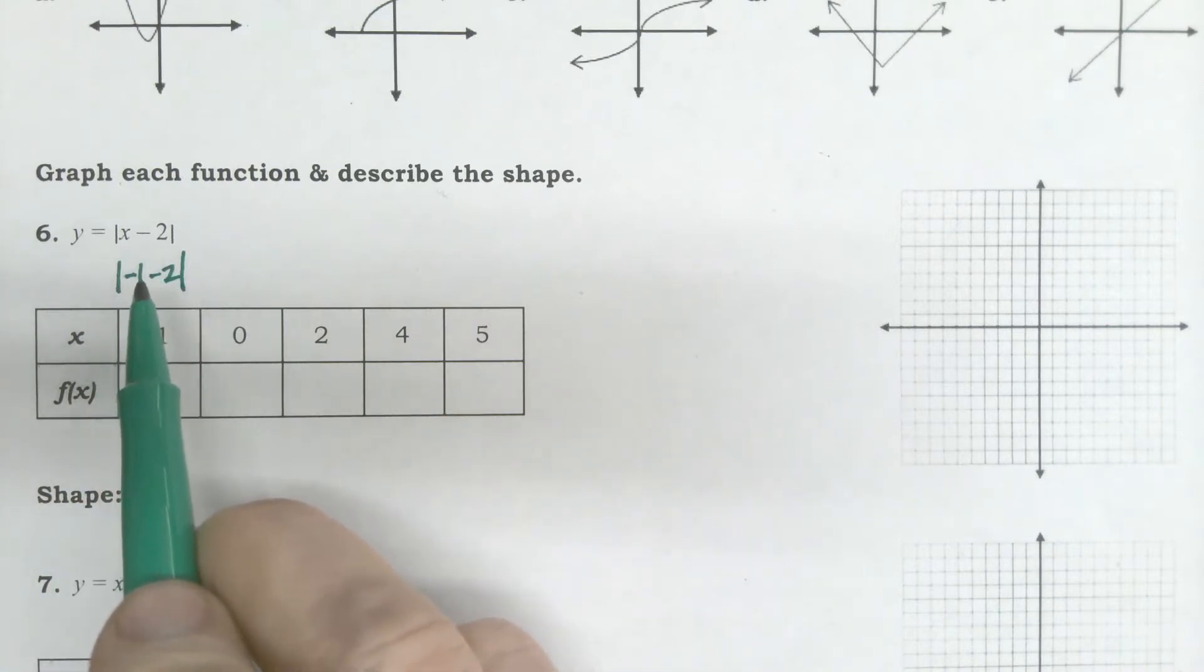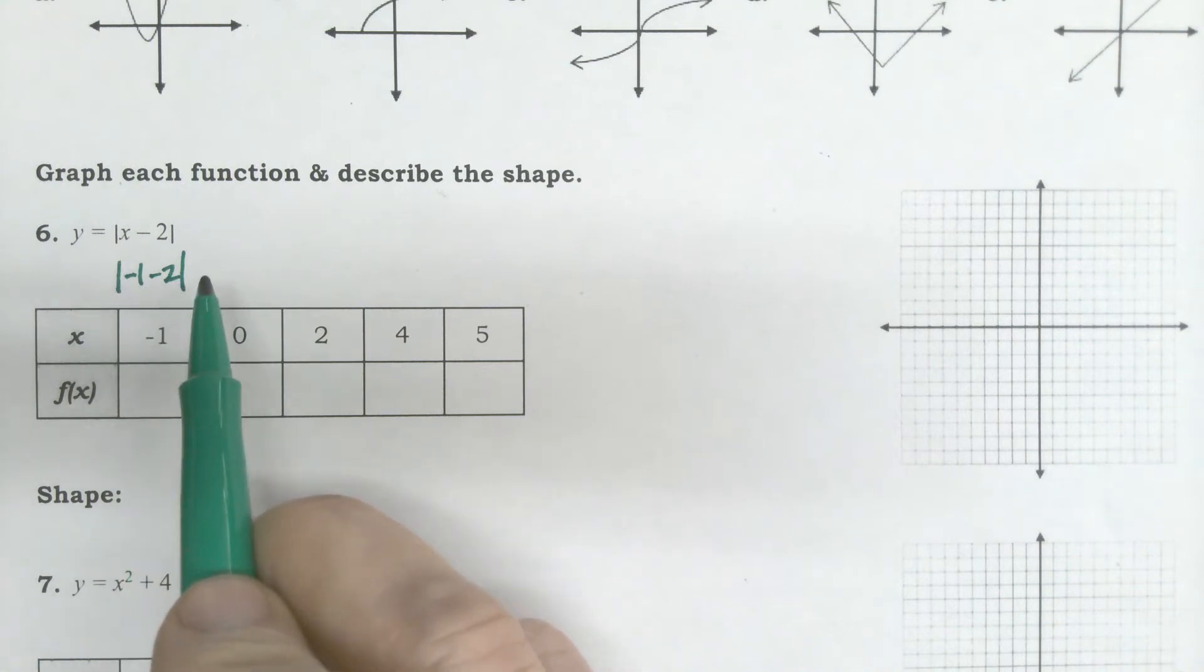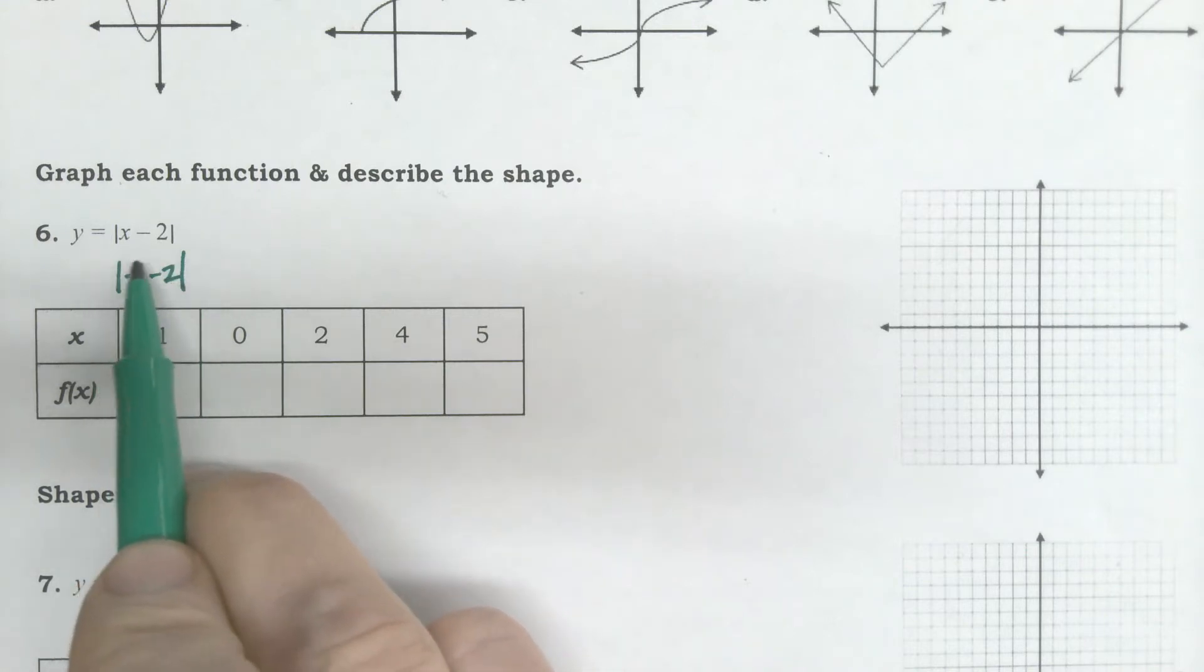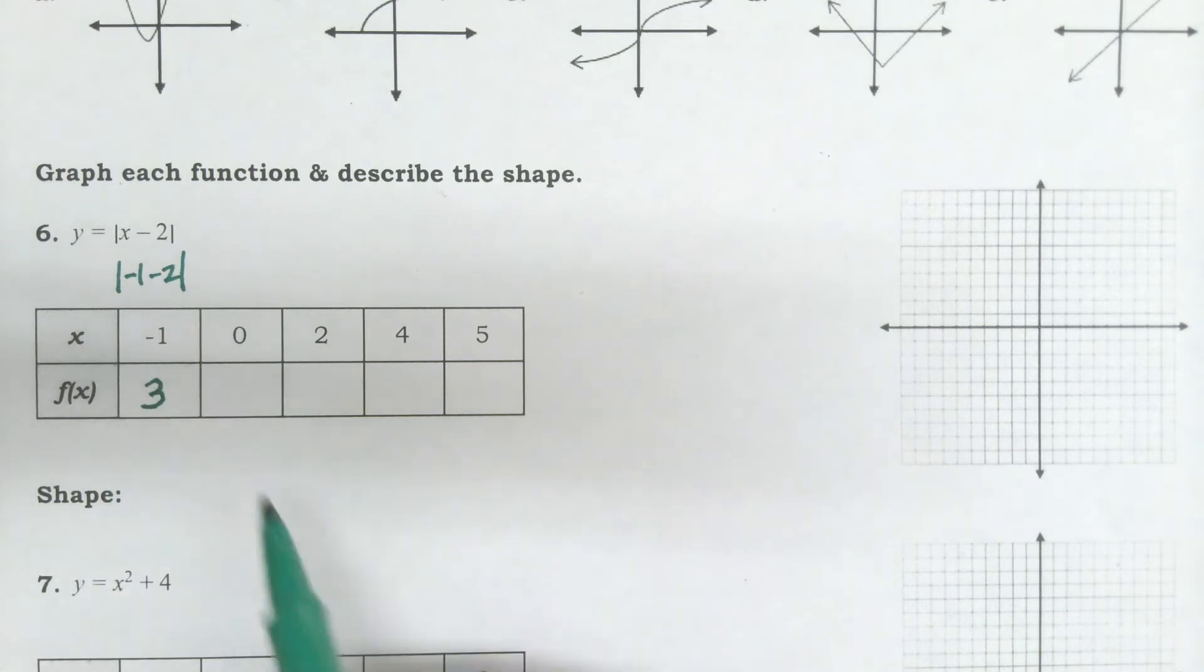So, for this first one, I'm going to do absolute negative 1 minus 2. Nope. Negative 1 minus 2. If you're not sure what it is, plug it in your calculator. What's negative 1 minus 2? Negative 3.